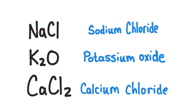Here are some examples. We have sodium chloride — two different elements, sodium and chloride. Over here we have potassium oxide. There are actually two potassiums in order to balance out the oxygen, but there are still only two different elements. And then we have calcium chloride — we need two of one of those elements to form this compound, but there are just two different elements making up that compound.